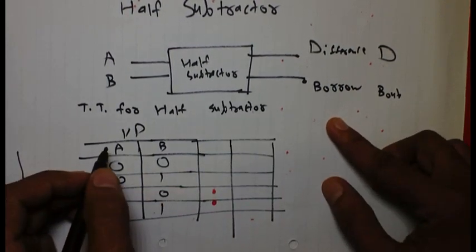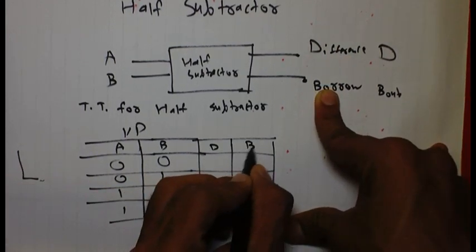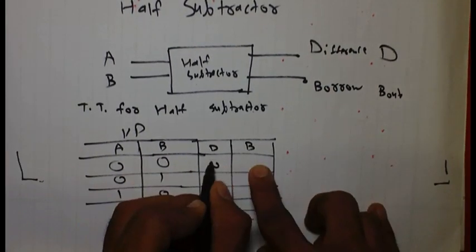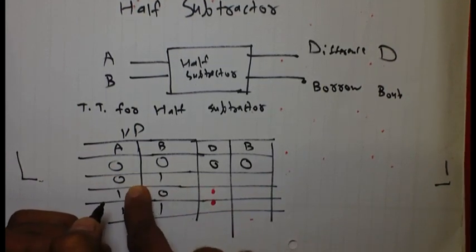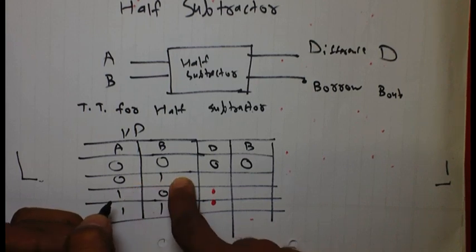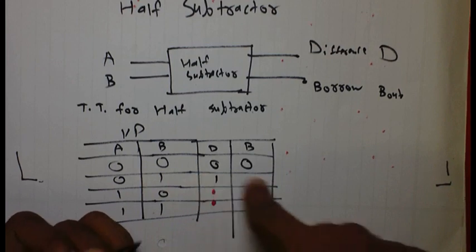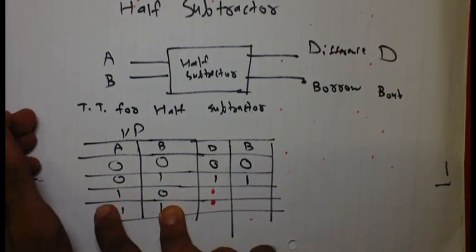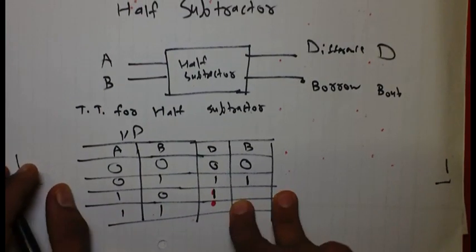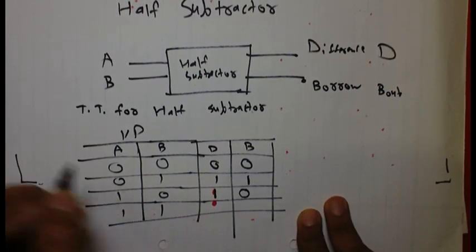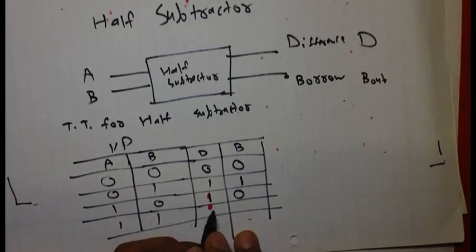And the output will be two outputs: one difference and one borrow. 0 minus 0 is 0. 0 minus 1, the difference will be 1 and borrow will be 1. Here 1 minus 0 is 1 and borrow will be 0, and 1 minus 1 difference will be 0 and borrow will be also 0.